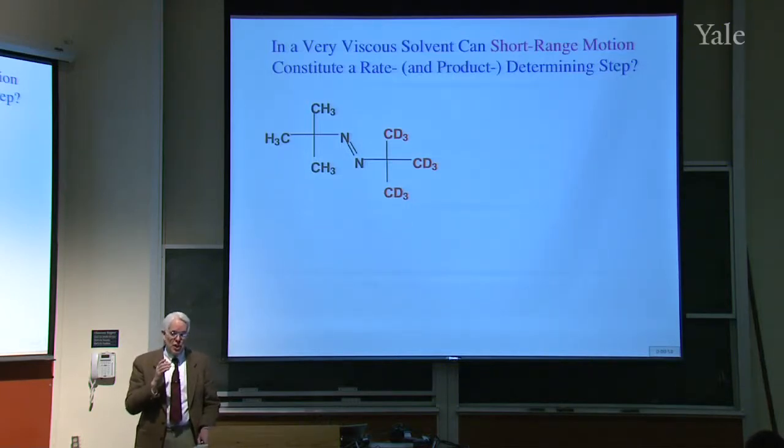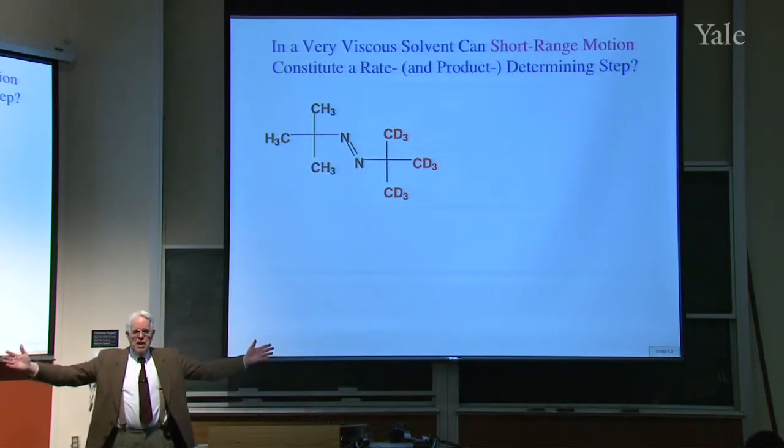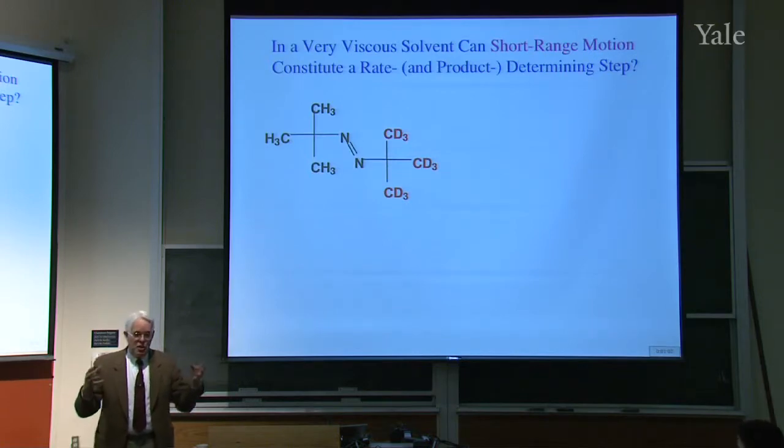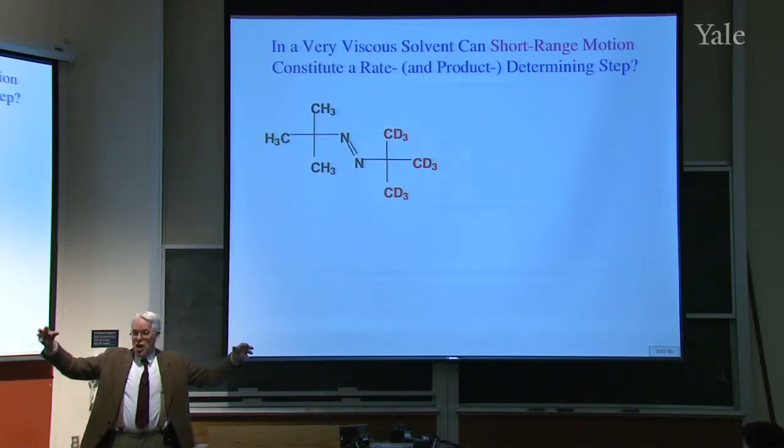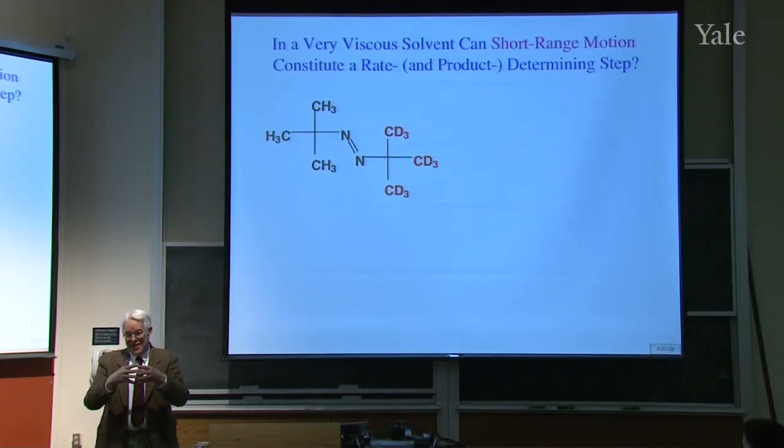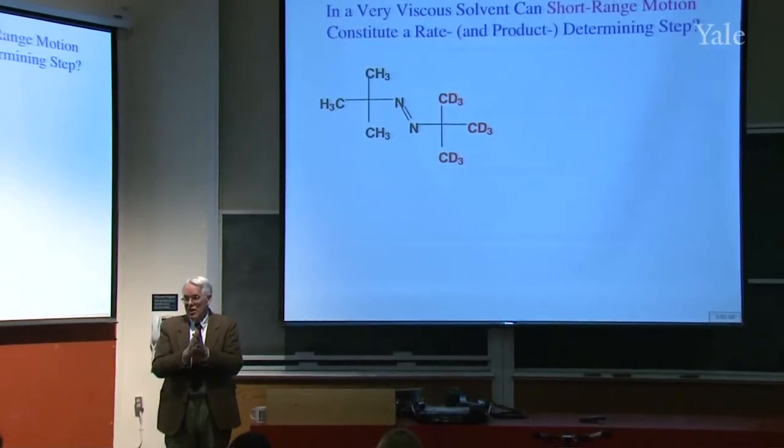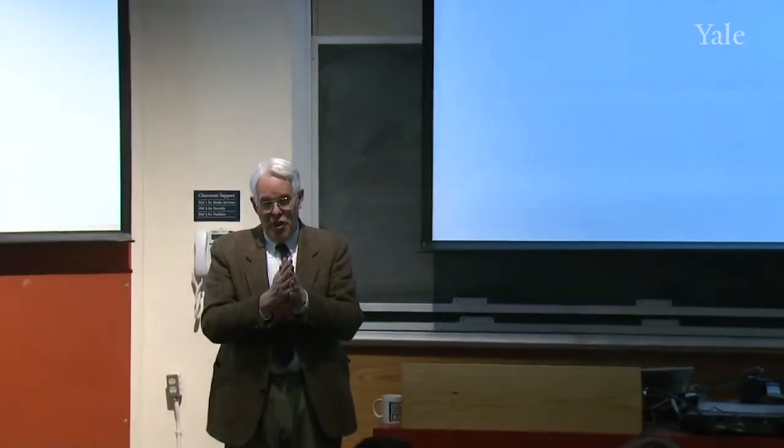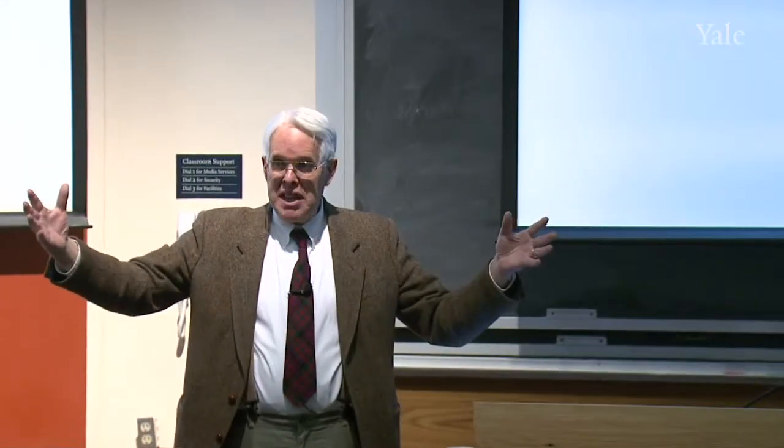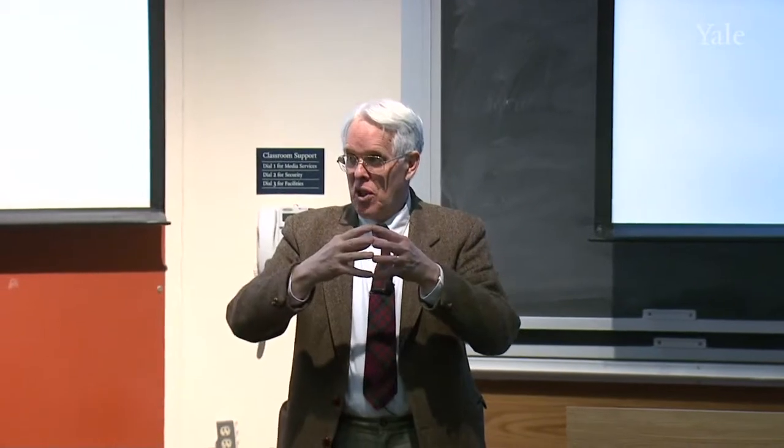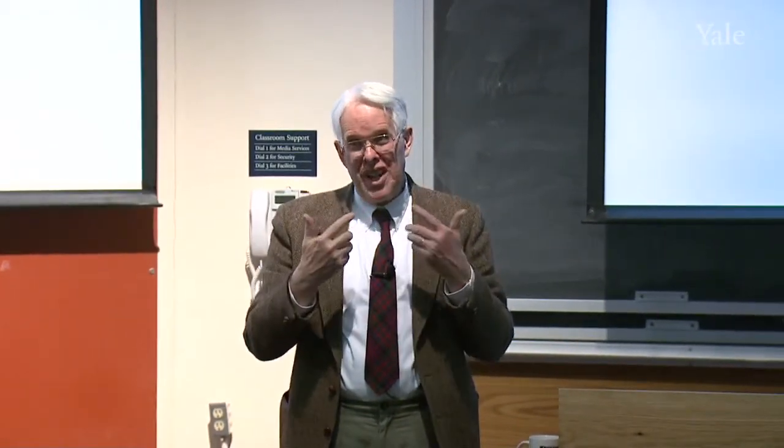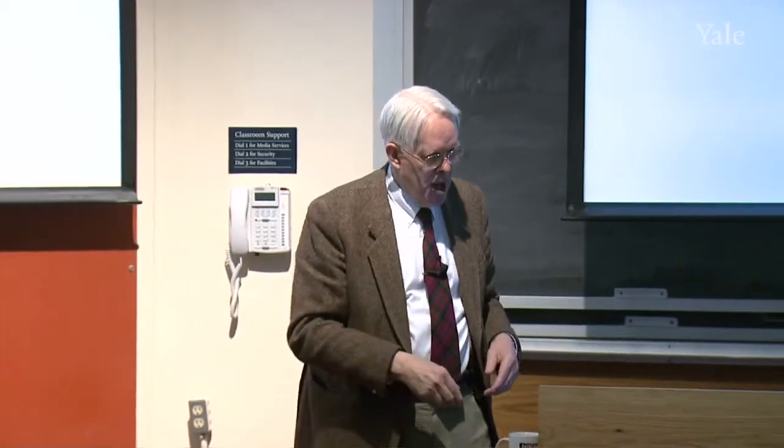Usually we think of bond formation or bond breaking being rate limiting. But obviously for two things to react with one another they have to get together. So that requires motion. If the medium is sufficiently viscous and the reaction that follows when they get close together is sufficiently fast, then it could be that the rate limiting step would be motion, not breaking or making bonds. So that was the question Joe David wanted to answer, whether motion would be the rate limiting step. Even very subtle, short range motion, it's easy to imagine long range motion could be rate limiting.